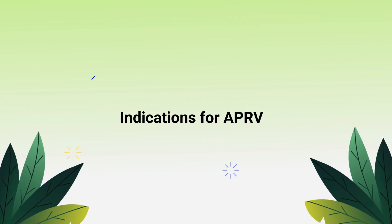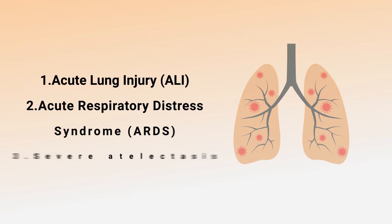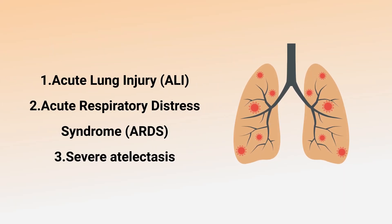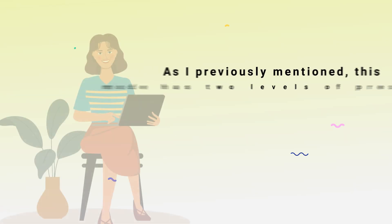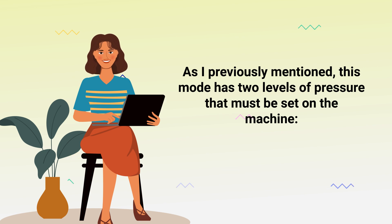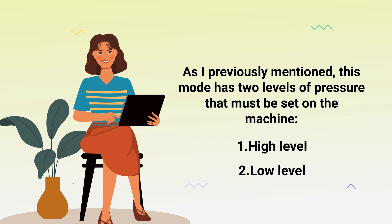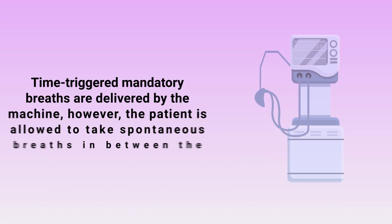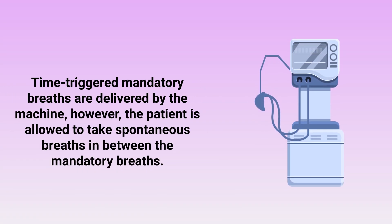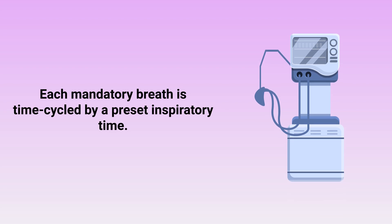Some of the most common indications for APRV include acute lung injury, acute respiratory distress syndrome, and severe atelectasis. This mode has two levels of pressure that must be set on the machine: a high level and a low level. Time-triggered mandatory breaths are delivered by the machine; however, the patient is allowed to take spontaneous breaths in between the mandatory breaths.